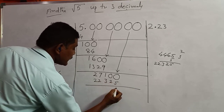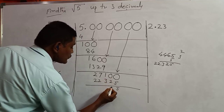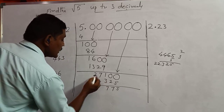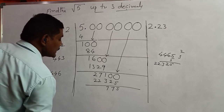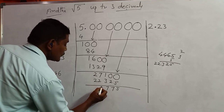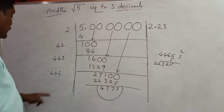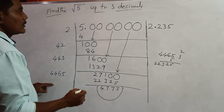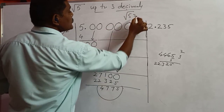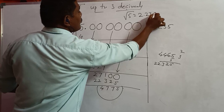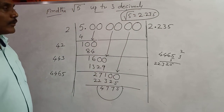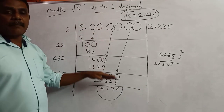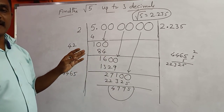22325: subtracting — 9 minus 2 is 7, 10 minus 3 is 7, 6 minus 2 is 4. The result is 5. So the square root of 5 is equal to 2.235, which is the required square root of 5. You have to take some more examples and practice the same manner to get the required square root of any irrational number.